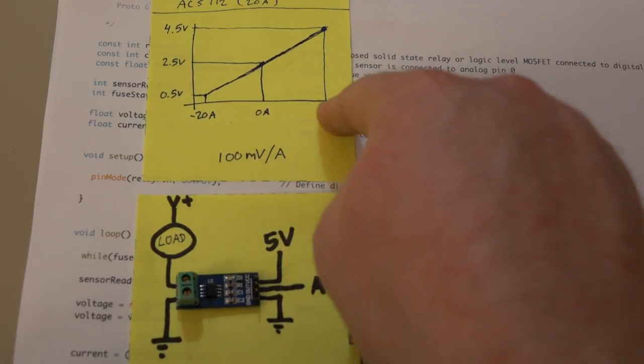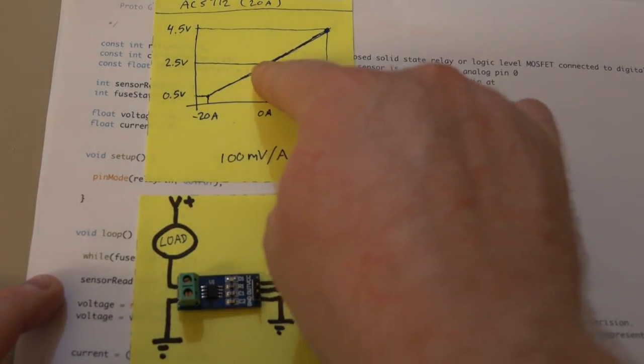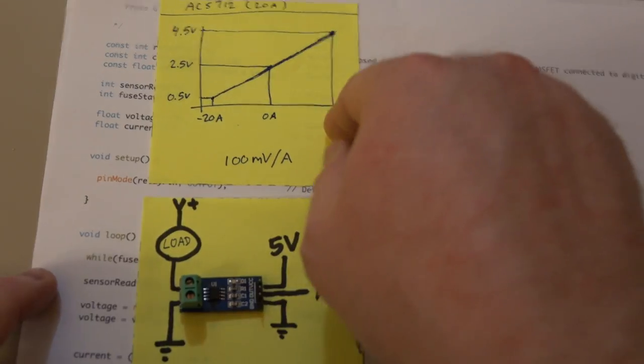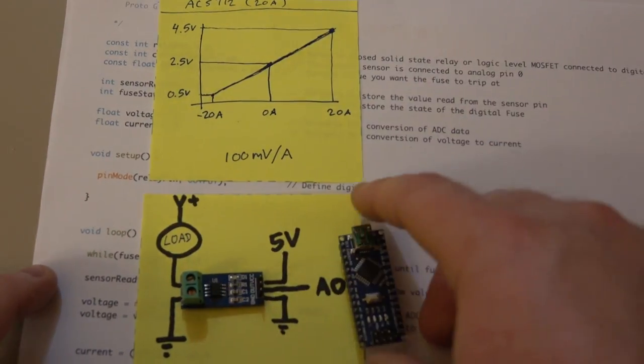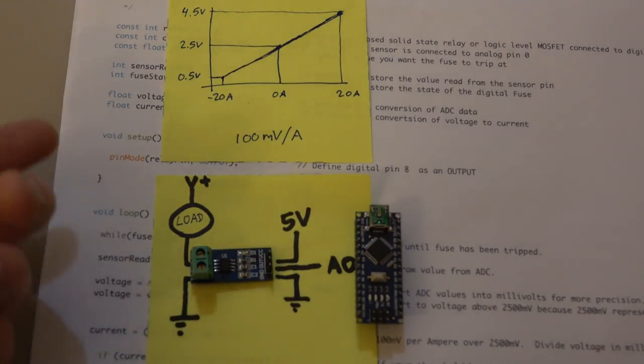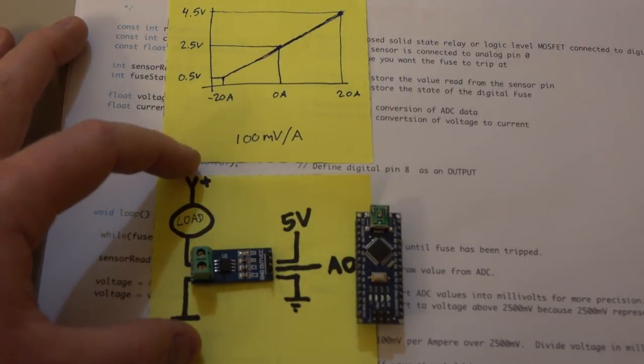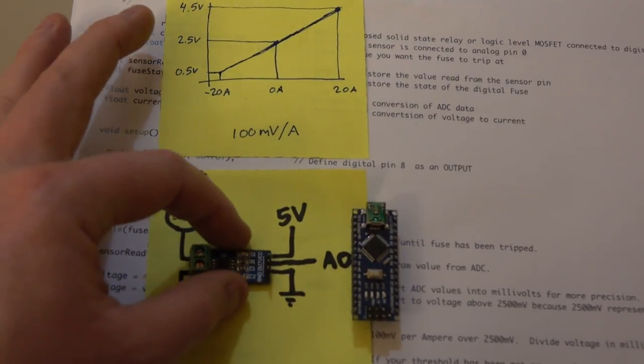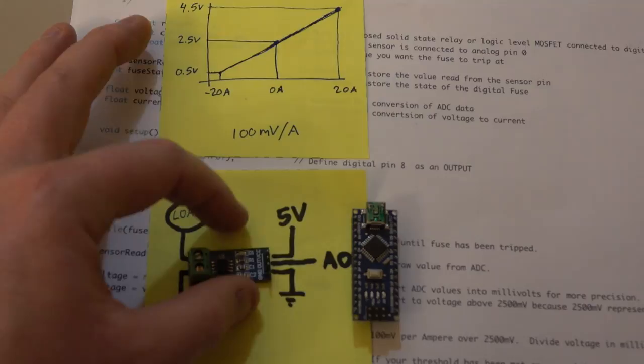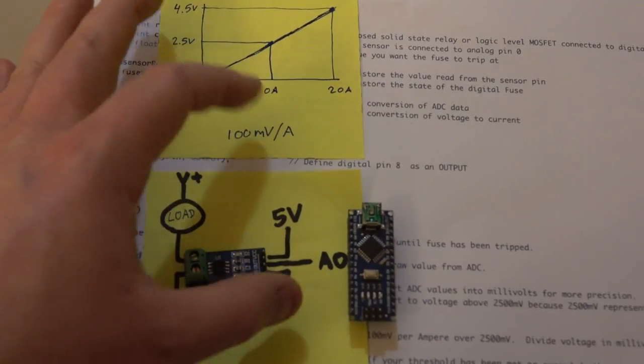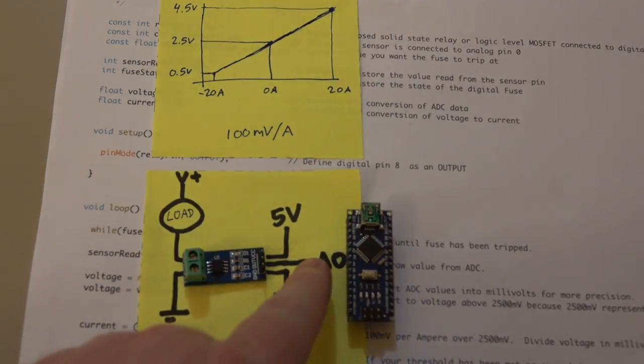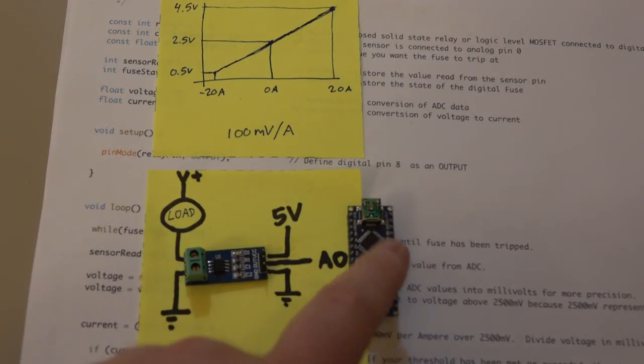We're only going to be looking at this top half. At 0 amps it outputs 2.5 volts, and at 20 amps it outputs 4.5 volts. To use this sensor, all you have to do is put it in series with the load that you're driving and the current that you want to monitor. On the other side, we give it 5 volts and ground. The middle pin is the output for your microcontroller.